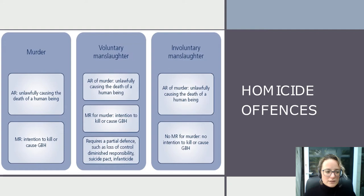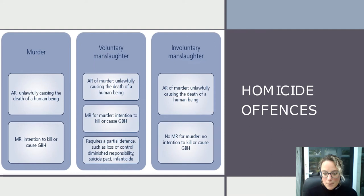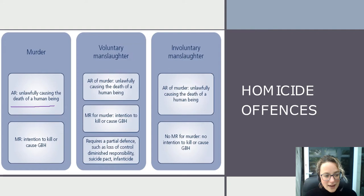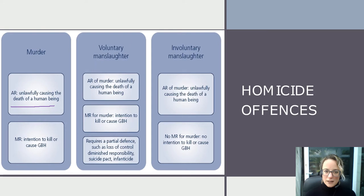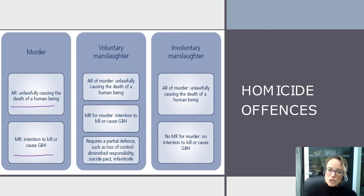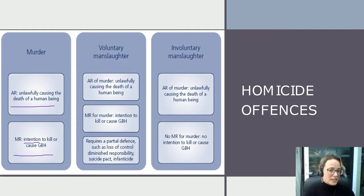Let's have a look at this table and begin to think about what that means in practice. We're talking about murder as a criminal offence in its own right, and you can see the outline of the actus reus of murder — the guilty acts required to start thinking perhaps what we have here is murder. You'll see it says 'unlawfully causing the death of a human being.' And underneath we have a box for mens rea, which contains the words 'intention to kill or cause GBH — grievous bodily harm.' The key word in that second box is 'intention.'